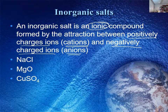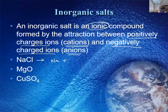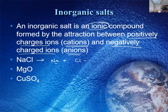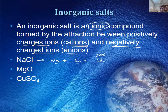In the first compound we have sodium, which is the cation — the positive — and chlorine, which is the anion — the negative. When we name these, we don't just call them sodium chlorine; we change the ending. So chlorine changes from I-N-E to I-D-E, and we call it sodium chloride.